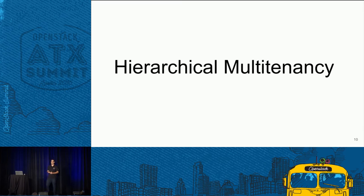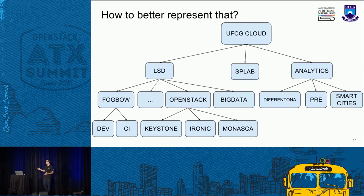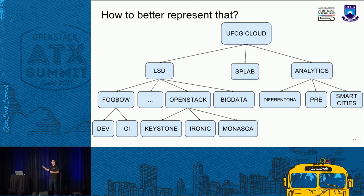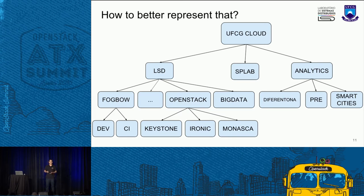What was our motivation to implement hierarchical multi-tenancy? Organizations are naturally hierarchical. In every company, we have departments, sub-departments, and sectors. In our university cloud, we have the UFCG cloud with a couple of labs — LSD, SP lab, analytics, and so on. Inside LSD, we have the Fogbowl project and a project for big data. More specifically on OpenStack, we have a Keystone team, a Ironic team, and so on. So how can we represent that inside OpenStack?